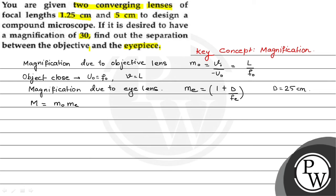The total magnification which is M is equal to M0 into ME. M0 is L by F0 and ME is 1 plus D by FE. Here we have values which are F0 and FE. That will be equal to F0 is equal to 1.25 cm and FE is equal to 5 cm. And D given is 25 cm and M is equal to 30.